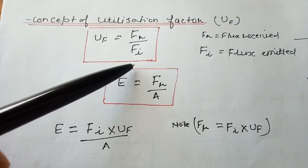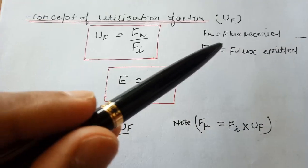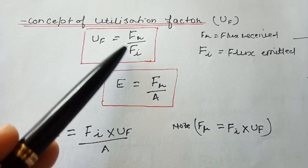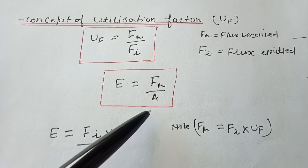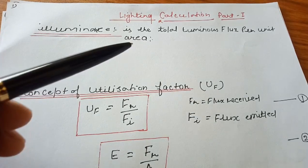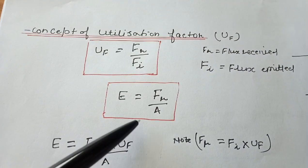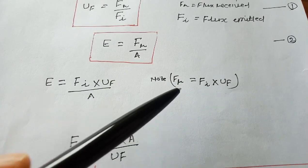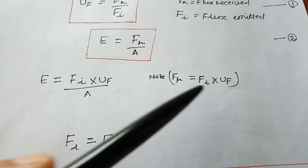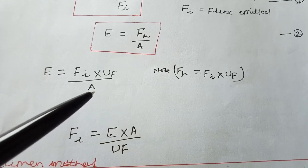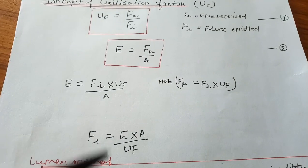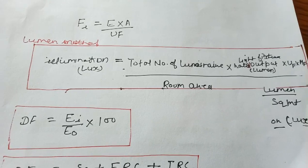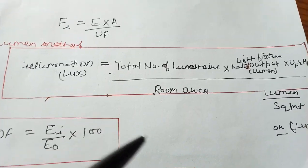Here, Fr is flux received and Fi is flux emitted. Illumination E is equal to flux received divided by area — the total luminous flux per unit area. Rearranging the formula, Fr equals Fi into UF (utilization factor), so E becomes Fi multiplied by UF divided by area. This gives us another formula for illumination. Next, we discuss the lumen method, used to calculate the number of luminaries, number of lamps, and number of fixtures.